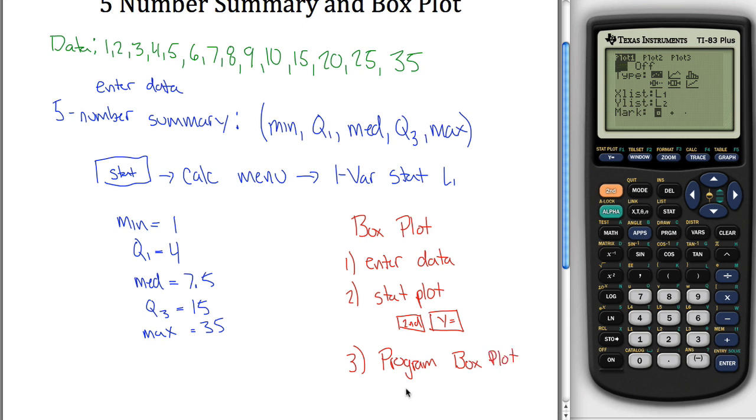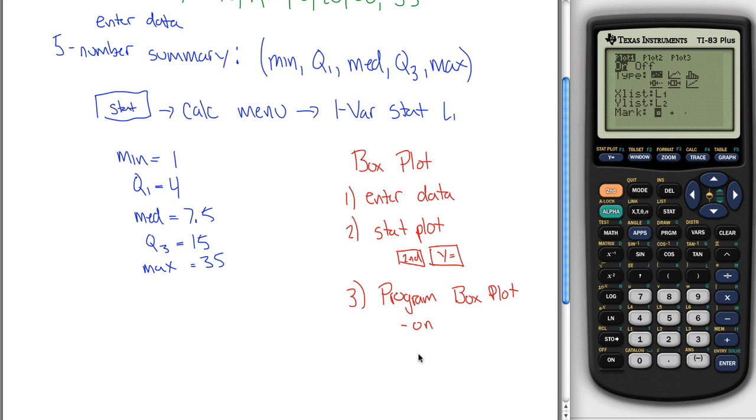The way you do that is first you have to turn it on. Select the one that kind of looks like a box plot. Notice this fourth one. I know the fifth one looks like a box plot too. The fifth one is actually just a visual representation of the five number summary. So we won't be using that. We'll be using the fourth one here. Select fourth type, and then